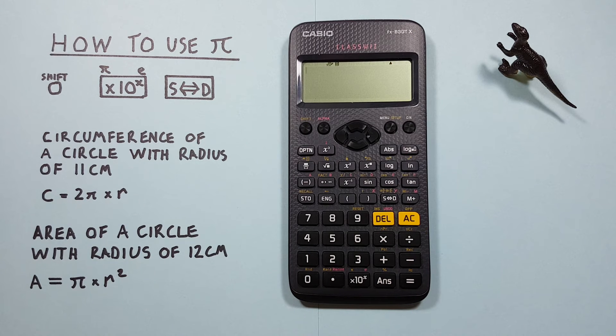We can use this for calculating the area of a circle as well. Let's say we wanted to find the area of a circle with a radius of 12 centimeters. We would use this formula: PI times R squared.